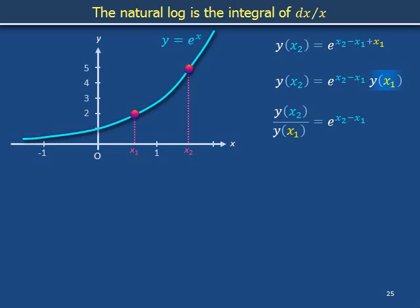Dividing both sides by y on x1, we find that the ratio between the height of the curve at x2 and the height of the curve at x1 equals e to the x2 minus x1, the base e taken to the horizontal distance between the x values. Take a moment to stare at this pattern.